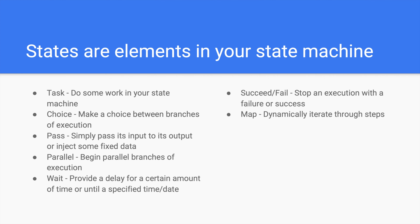A pass state is useful for when constructing and debugging state machines. A parallel state can be used to create parallel branches of execution in your state machine. A wait state delays the state machine from continuing for a specified time — you could use this for when you want a separate parallel task to complete that you are dependent on. A succeed state stops an execution successfully, while a fail state stops the execution of the state machine and marks it as a failure. And finally, the map state can be used to run a set of steps for each element of an input array.